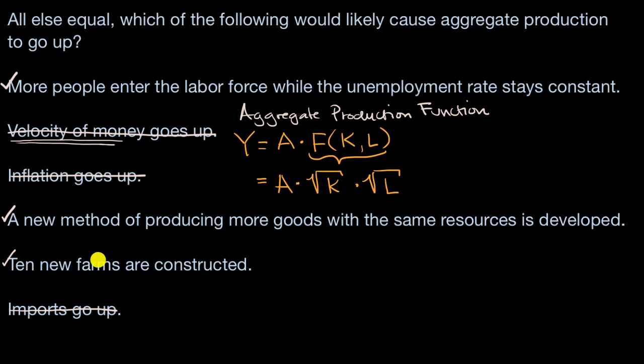But in general, and as you see in this example, you're going to see aggregate production functions that look something like this. The radicals or the square roots on capital and labor might be a little bit different, but they tell the same story.